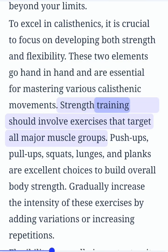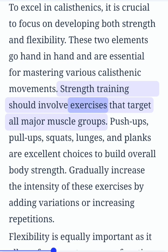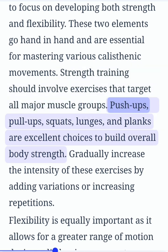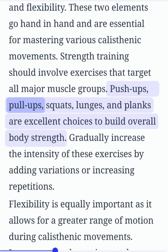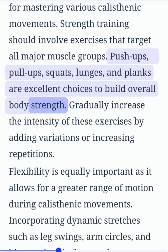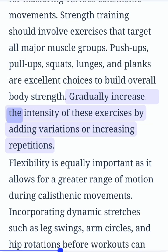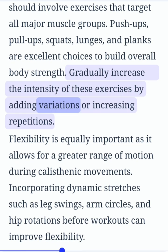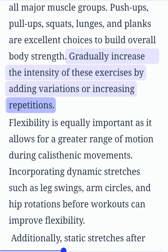Strength training should involve exercises that target all major muscle groups. Push-ups, pull-ups, squats, lunges, and planks are excellent choices to build overall body strength. Gradually increase the intensity of these exercises by adding variations or increasing repetitions.